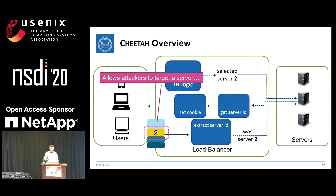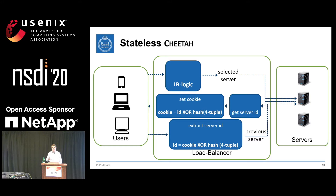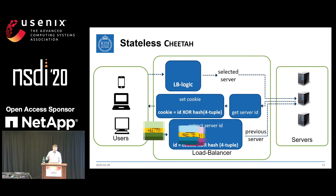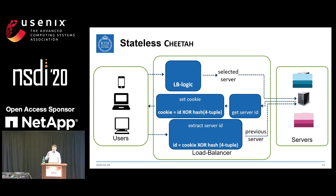The scheme works, but there's a slight problem: we allow an attacker to target a single server by coordinating requests, potentially bringing it down. So in practice, instead of putting the server ID directly into the cookie, we store the XOR of the server ID and the hash of the four-tuple of the connection. We send this obfuscated cookie to the client; the client gives it back, and we XOR again to cancel the hash and recover the original server ID. If multiple clients force the same cookie, they will either be directed to a wrong server index — allowing us to drop the packet — or the attack will spread across all servers.